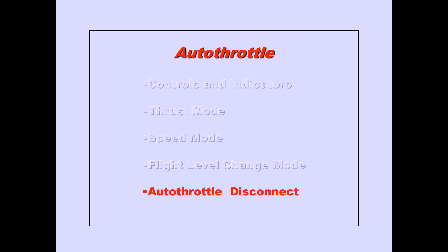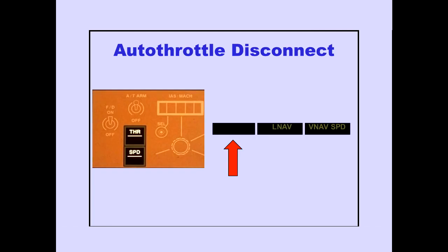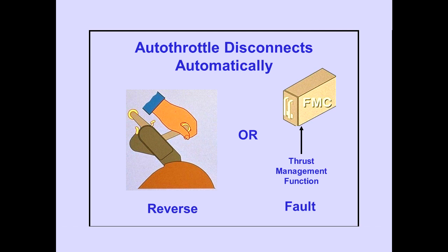Now let's discuss autothrottle disconnect. The autothrottle can be disconnected by pushing an autothrottle disconnect switch, or by turning the autothrottle arm switch off. The autothrottle cannot be engaged with the arm switch off. When the autothrottle is disconnected, the light bar in the engaged mode switch will extinguish, and the autothrottle display on the PFD is blanked. The autothrottle disconnects automatically when reverse thrust is selected, or when an FMC thrust management function fault is detected.